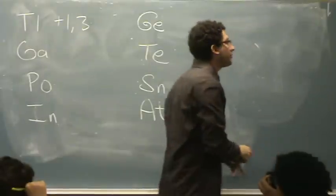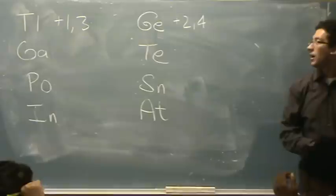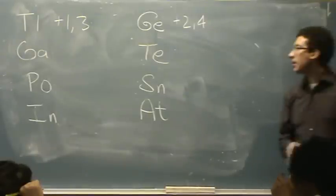Germanium is +2 and +4. It's in the second column. Gallium, first column, +1 and +3.